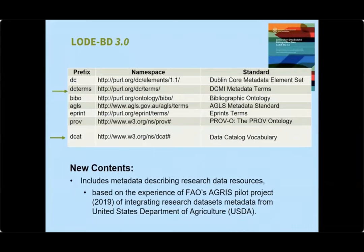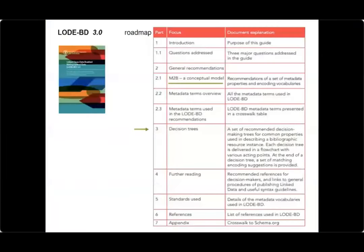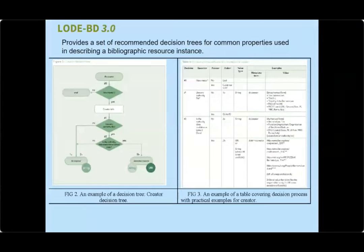A new version 3 was released in 2020 and is fully available online — it actually became a book. Following both DCMI metadata terms up-to-date specification and W3C's recommendation Data Catalog Vocabulary DCAT version 2, released in early 2020, LOD-BVD conducted a full modification and extension in the 3.0 edition. As the movement of open research data has become more mainstream, this new version also includes metadata describing research data resources, based on the experience of FAO's AGRIS pilot project integrating research dataset metadata from USDA, successfully conducted in 2019.